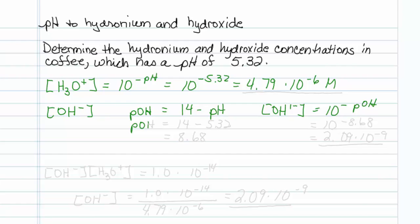My pOH is going to be equal to 14 minus 5.32. That value turns out to be 8.68. So if I want my hydroxide concentration, I should take 10 to the minus 8.68, and that value is 2.09 times 10 to the minus 9.